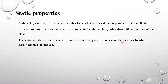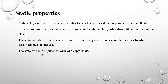A static variable declared inside a class shares a single memory location across all instances. If we have n number of instances, the static variable is shared among all of them. Any changes made by one instance will be reflected in another instance, because they share a single memory location — similar to shallow copy behavior.